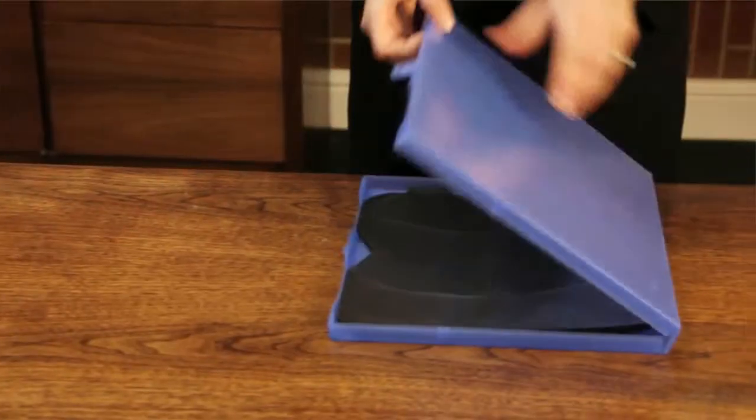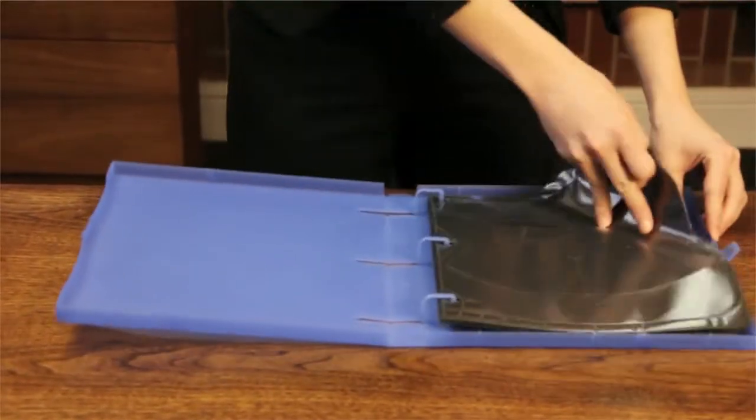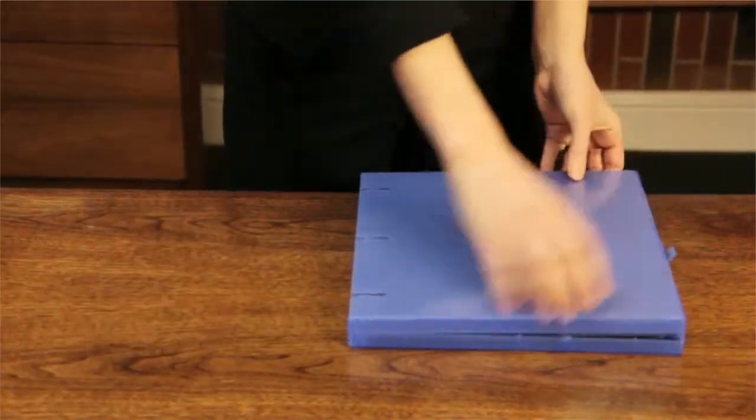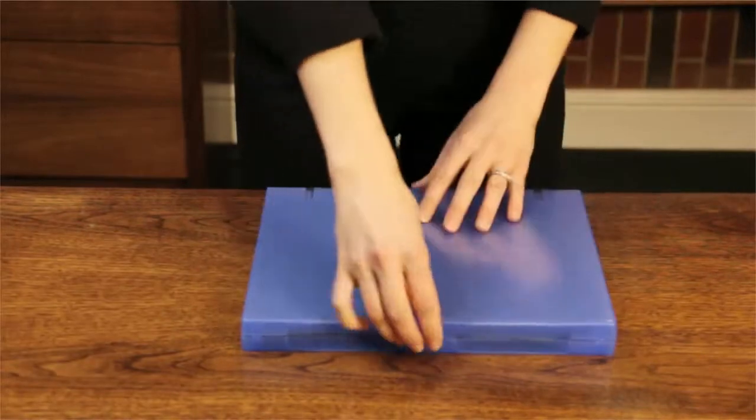Unlike other three ring binders, Unikeep Media Disk Binders are made from durable, recyclable polypropylene and are fully enclosed to protect their contents.